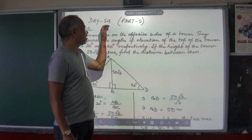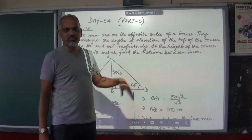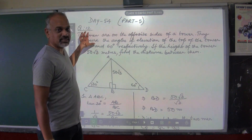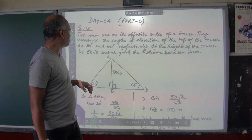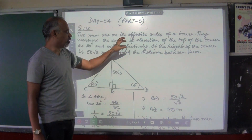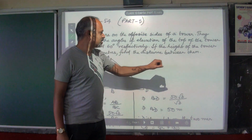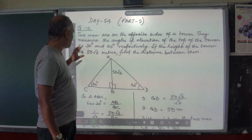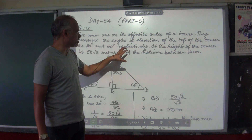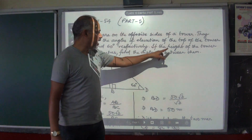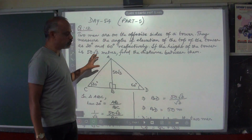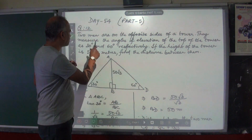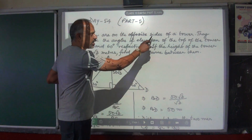We are on day 54. This is part 5 of the same chapter on heights and distances. Exercise 22, question number 12. Two men are on the opposite sides of a tower. They measure the angles of elevation of the top of the tower as 30 degrees and 60 degrees respectively. If the height of the tower is 50 root 3 meters, find the distance between them.